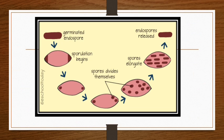In the diagram of spore formation, the first diagram shows germinated endospores. The vegetative cell undergoes germination, spore replication begins, and spores increase in size and number. The spores elongate and are then released from the vegetative cell.